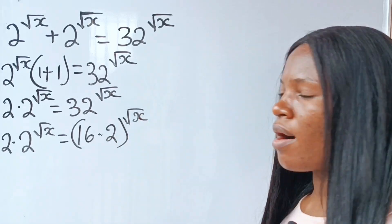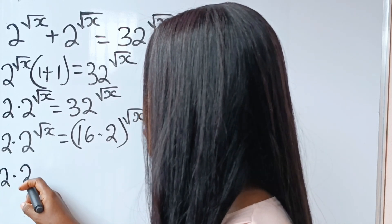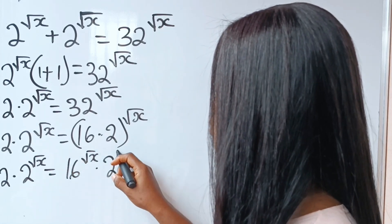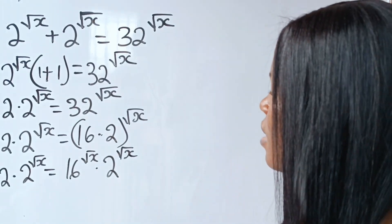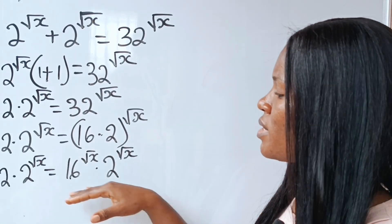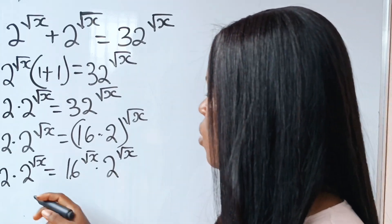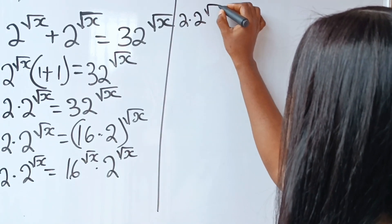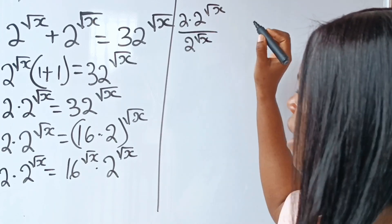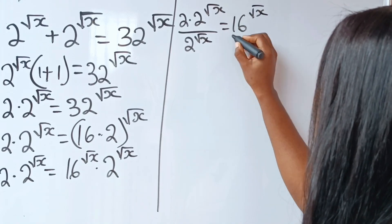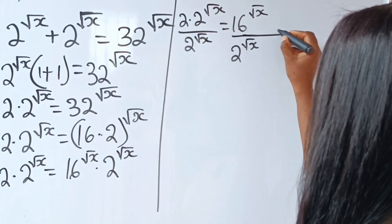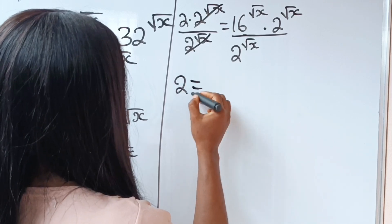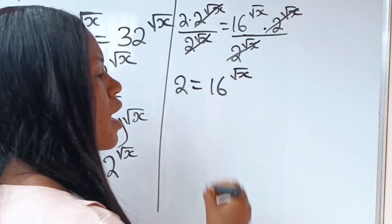We can distribute this power to both factors, so we have 2 multiplied by 2 to the power of root x equals 16 to the power of root x multiplied by 2 to the power of root x. Now we divide both sides of this equation by 2 to the power of root x. The 2 to the power of root x terms cancel on the right, leaving us with 2 equals 16 to the power of root x.